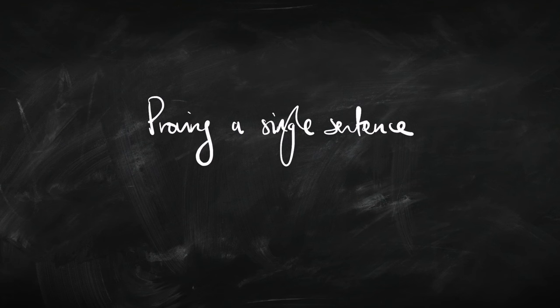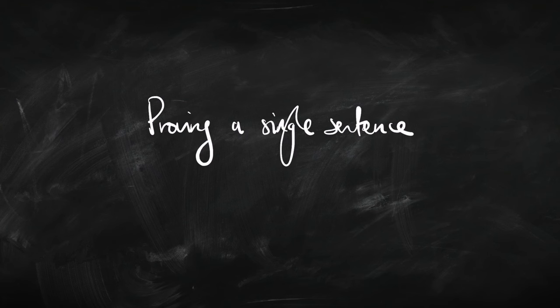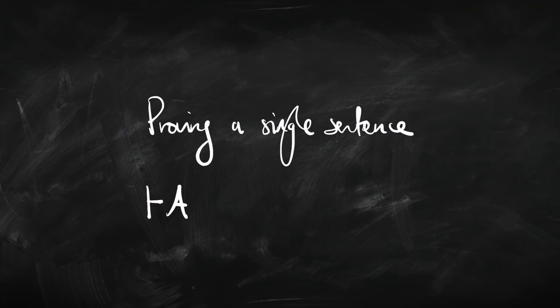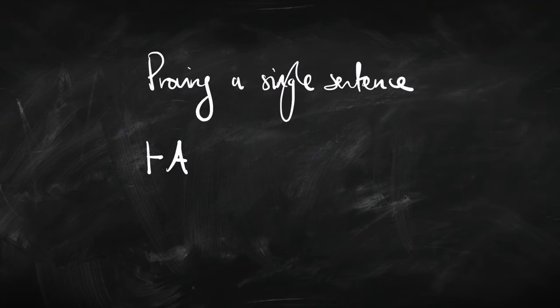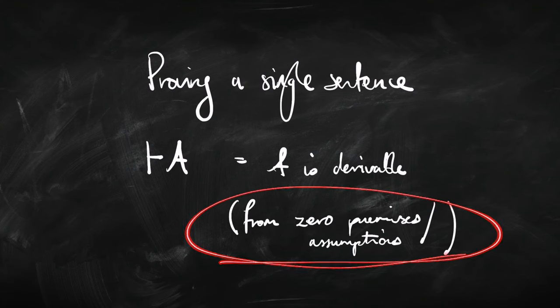We can use natural deduction to test an argument — proving a conclusion from some premises — but we can also prove individual sentences. Think about this like the case of entailment with zero premises. Proving a single sentence is just like proving an argument that doesn't have any premises. When a sentence is provable on its own without any premises, we write it using the single turnstile symbol — one horizontal bar — to say that A is provable or derivable from zero premises.